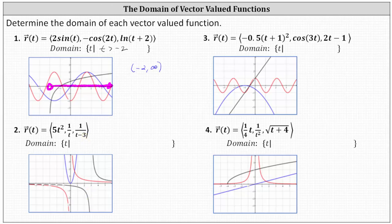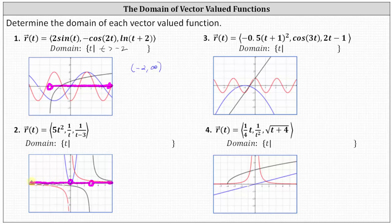Because zero is not in the domain of y of t, it cannot be in the domain of the vector-valued function — let's make an open point at t equals zero. Because t equals three is not in the domain of z of t, three cannot be in the domain of r of t — let's make an open point at t equals three. For all other values of t, notice all three functions are defined. This is the intersection of the three domains and therefore the domain of the vector-valued function: t such that t is less than zero, or t is greater than zero and less than three, or t is greater than three.